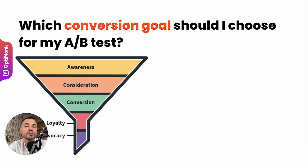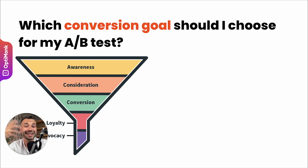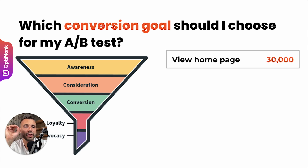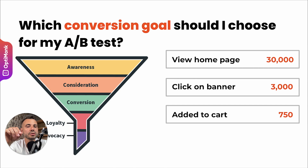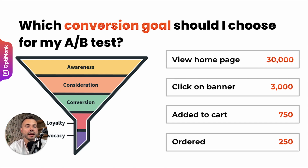The next question is: which conversion goal should you choose for your A/B test — what do you want to optimize for? While it seems obvious to optimize for orders and revenue, it's not so clear in practice. For example, if you want to A/B test a key banner on your homepage with 30,000 homepage visitors, 10% click the banner (3,000 clicks), 750 add a product to cart, and 250 actually order. If you pick orders as the conversion goal, you'll probably need more than 30,000 visitors to decide which banner version performs better.